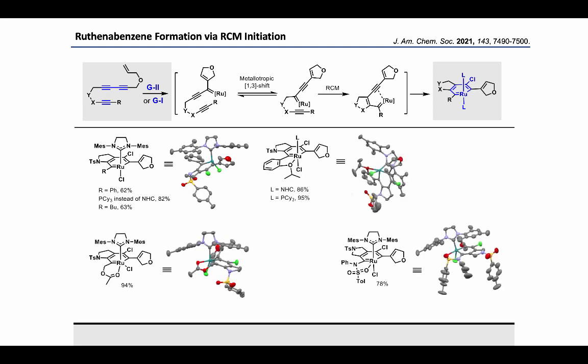To synthesize the usual 16-electron complex with square pyramidal geometry, we introduced a chelating group like a 2-isopropoxyphenyl substituent, which forms an oxygen chelate, as confirmed through X-ray structures. Other chelated ruthenobenzenes involve the acetate and sulfonamide chelated ruthenobenzenes. Shifting the NTs group to the middle, we can synthesize a series of rutheniaisoindolenes. Here also we can bring variation in the R-substituent by changing from phenyl to ferrocenyl to isopropenyl.